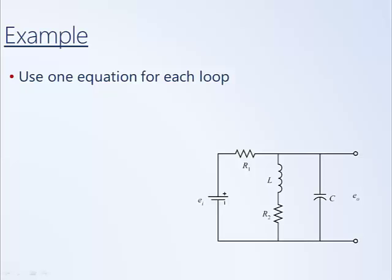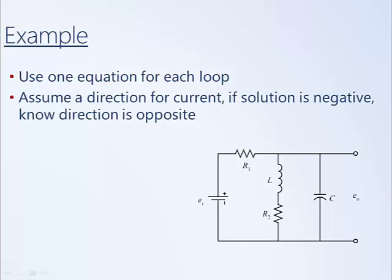In this case, we will end up with one equation for each loop. What we will do is assume a direction for the current. We may not know for sure which direction current is flowing through a particular loop, but if it turns out that we guessed incorrectly and the current came out to be negative, then we would know that it's opposite the direction we assumed.